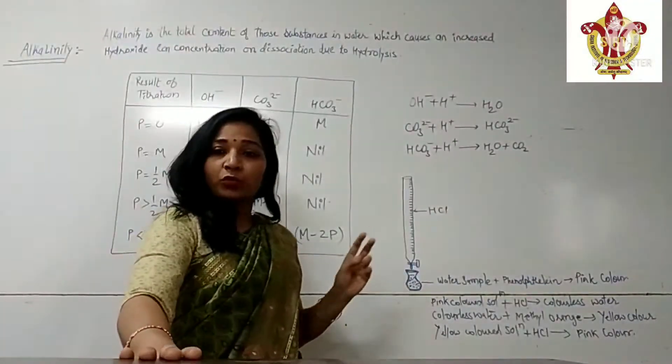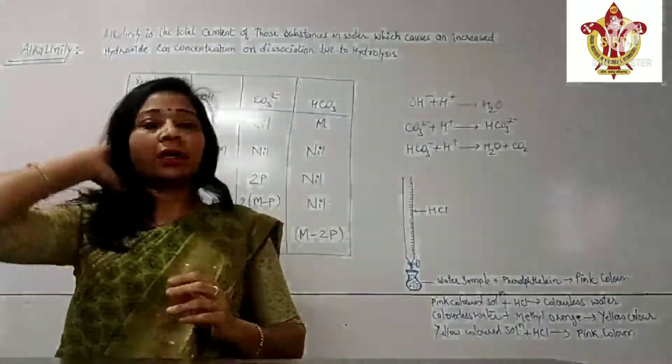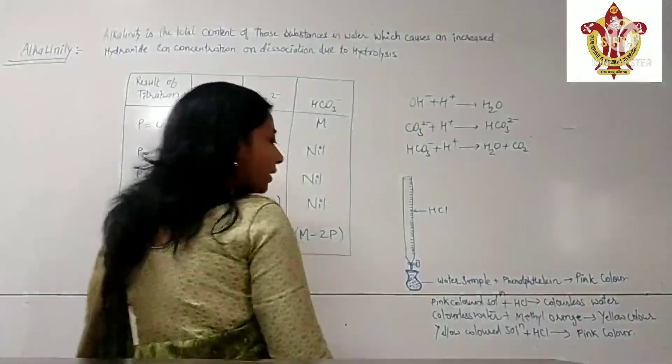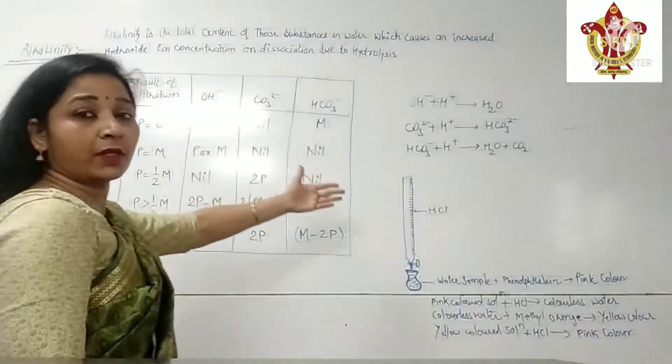Water sample mein do boondein phenolphthalein ki dalte hai. Phenolphthalein ki drop dalne par color solution ka pink ho jata hai. That pink colored solution is then treated with HCl.